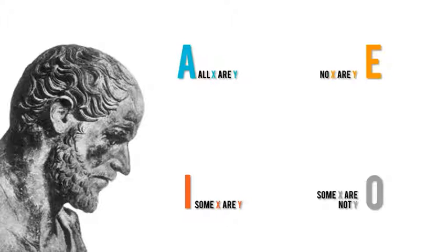Alright. So, A and E are said to be contrary, because assuming that we're talking about the same X and Y, then A and E can't both be true at the same time.